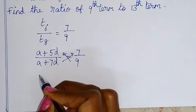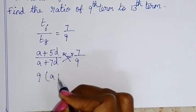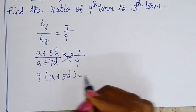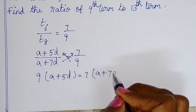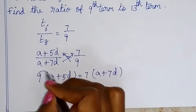So cross multiply. 9 into A plus 5D is equal to 7 into A plus 7D. So 9A plus 45D...